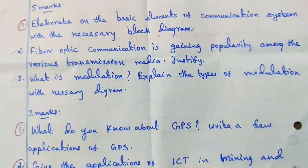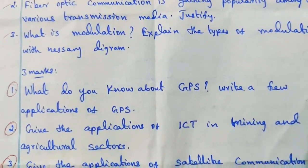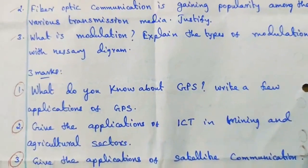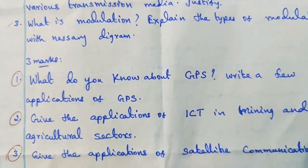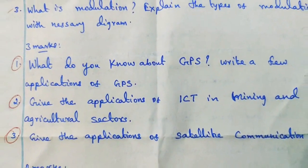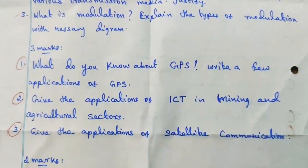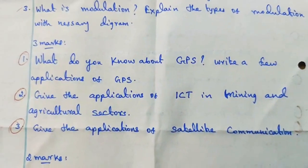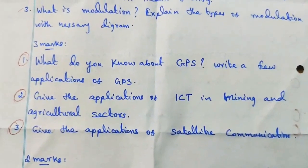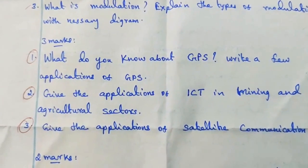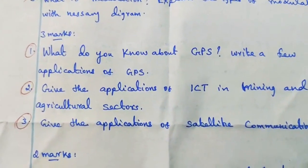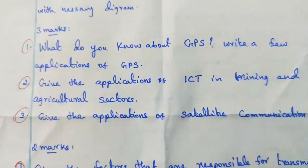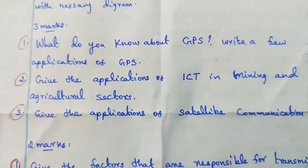3-mark questions: 1st question is very important — what do you know about GPS? Write a few applications of GPS. 2nd question: give the applications of ICT in mining and agricultural sectors — this is important. 3rd question: give the applications of satellite communication.